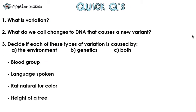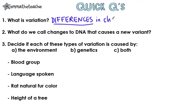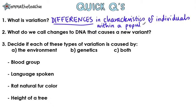Okay, let's try some quick questions. Pause the video, give them a go, and press play when you're ready to go through them. Number one: what is variation? Differences — and that's a really important word — in characteristics of individuals within a population. Number two: what do we call changes to DNA that cause a new variant? These are mutations.